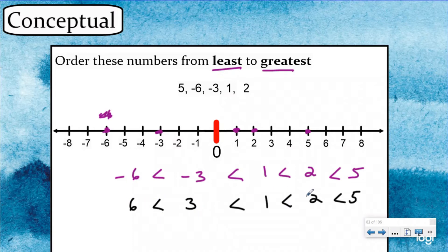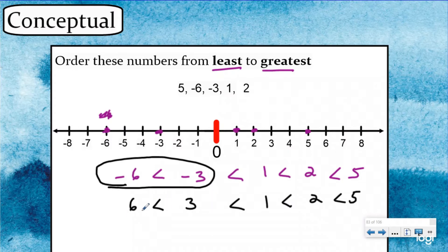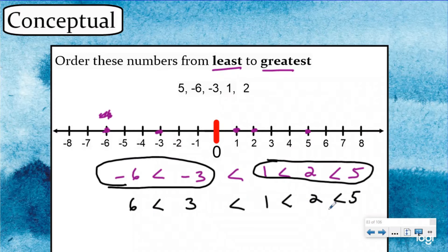Now when I look at the absolute values, are they in the correct order? The answer is no, because six is not less than three, and three is not less than one. If you look at the negative numbers, they are backwards of what they should be, but my positive numbers are exactly correct. So I would have to flip my negative numbers and put them in different spots, but my positive numbers are correct. That's because absolute value is always written in positive form because it's showing us how far away from zero the numbers are.